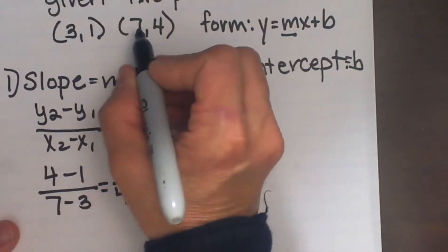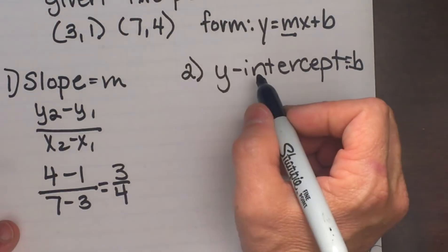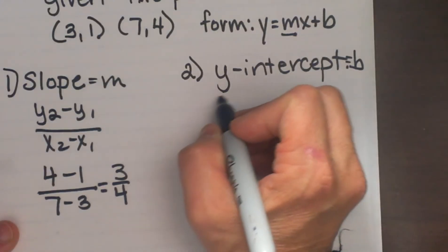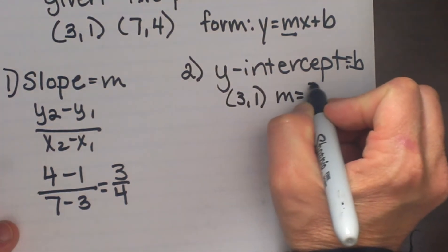So let's plug in. We can pick either point, either (3,1) or (7,4). I'm going to pick (3,1). So I'm going to use the point (3,1) and the slope of 3/4.